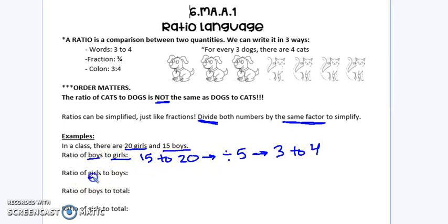Now I'm going to do the same thing, but I'm going to do the ratio of girls to boys. So there's 20 girls for every 15 boys, and I've already done the simplifying, because it's the same numbers from the last example.